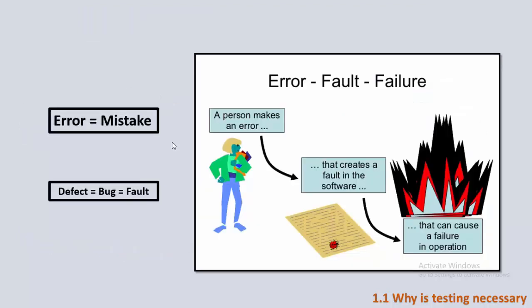So we are talking about error, mistake, fault, bug, and failure — what is the difference between these words? When the developer works on software and does a function in an incorrect way, what the developer does is called an error or a mistake. This error or mistake causes a defect, bug, or fault in the software.